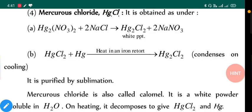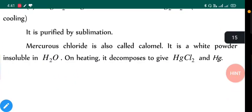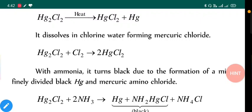It is purified by sublimation, and mercurous chloride is also called calomel. It is a white powder insoluble in water. On heating it decomposes to give HgCl₂ and Hg as this reaction shows. It dissolves in chlorine water forming mercuric chloride - that means higher oxidation state. If you check oxidation state of Hg₂Cl₂, then it will be +1, and if you check oxidation state of Hg in HgCl₂, then it will be +2. So lower oxidation state is called mercurous chloride and higher oxidation state is called mercuric chloride.